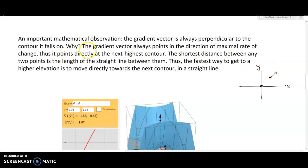Another important observation is that the gradient vector always points in the direction of maximal rate of change, thus it points directly at the next highest contour. Why is that? If we have a contour plot on here that maybe looks like something like this - this might be z = 10 and this might be z = 20 - the gradient points in the direction of maximal rate of change, which means it's going to take us to the next highest elevation as quickly as possible. The shortest distance between any two points is the length of the straight line between them, thus the fastest way to get to a higher elevation is to move directly towards the next contour in a straight line. This angle here between - if we were to zoom in on this contour right about there - we would find out that these two lines are perpendicular to one another, and that's the idea of local linearity. We're going to demonstrate that next with a three-dimensional surface.